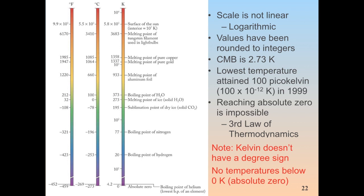The melting point of ice is zero degrees Celsius, 32 Fahrenheit, 273.15 Kelvin. The boiling point of water is 100 degrees higher: 373 Kelvin, 100 degrees Celsius, or 212 Fahrenheit. Aluminum melts around 660 degrees Celsius, gold melts around 1,337 Kelvin, and pure copper melts around 1,000 degrees Celsius — a little bit above gold.